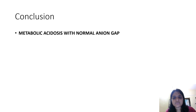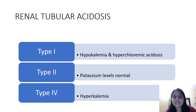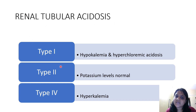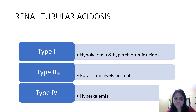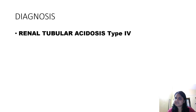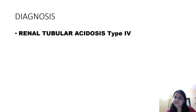There is normal anion gap metabolic acidosis. Renal tubular acidosis (RTA) is one condition presenting with metabolic acidosis. In type 1 RTA, you get hypokalemia and hyperchloremic acidosis. In type 2, potassium levels are normal. In type 4 RTA, there is hyperkalemia. Here, there is metabolic acidosis with hyperkalemia, so this is a case of renal tubular acidosis type 4.